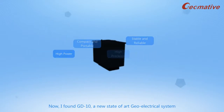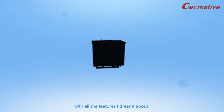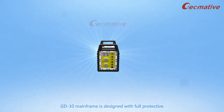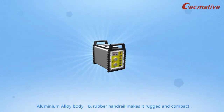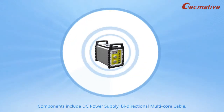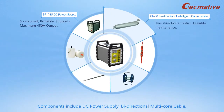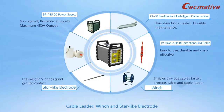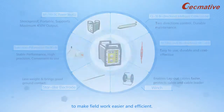Now I found GD-10, a new state-of-the-art geo-electrical system with all the features I dreamed about. GD-10 mainframe is designed with a full protective aluminum alloy body and rubber handrail, making it rugged and compact. Components include DC power supply, bi-directional multi-core cable, cable leader, winch, and star-like electrode to make field work easier and efficient.